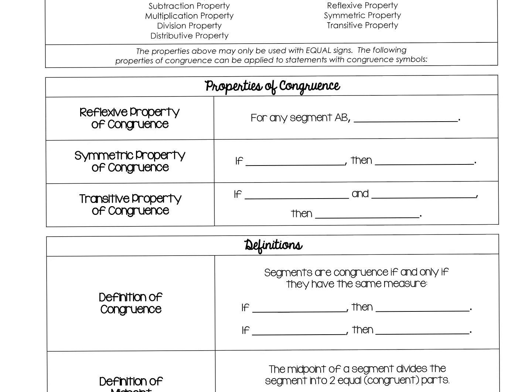We're going to go over some properties and definitions to get you set for the notes we're going to take. We're still going to use all of the same properties: addition, subtraction, multiplication, division, distributive, substitution, reflexive, symmetric, and transitive — all of those are still going to be part of what we are doing.